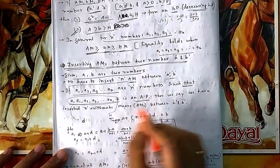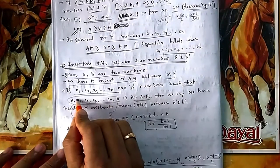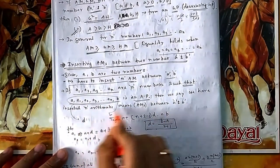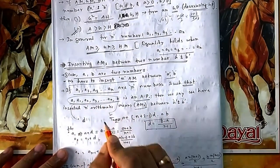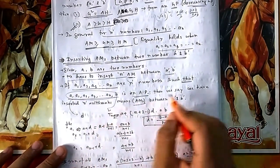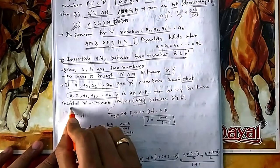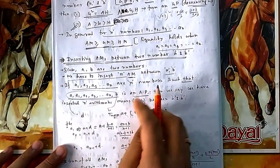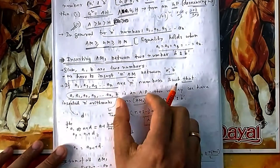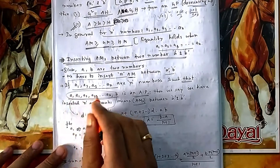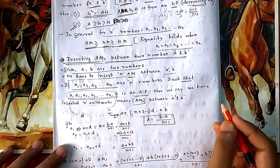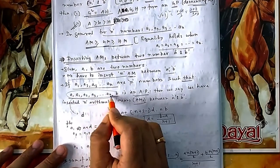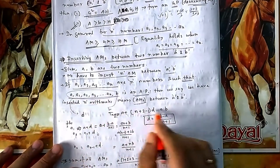Then the middle numbers a1 through an are the arithmetic means. We say we have inserted n arithmetic means. If you can write them in AP format, then all those middle terms are the AMs between a and b.